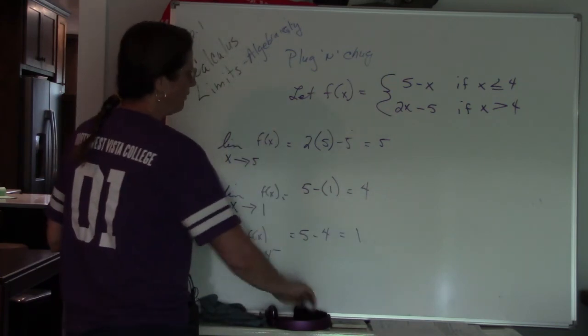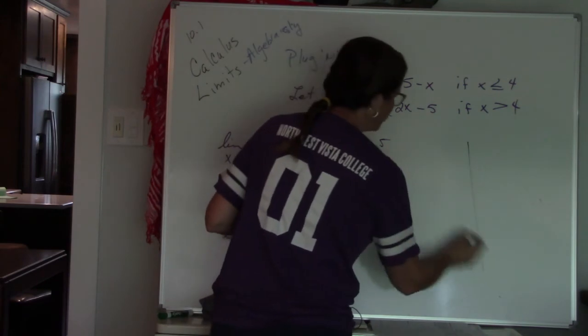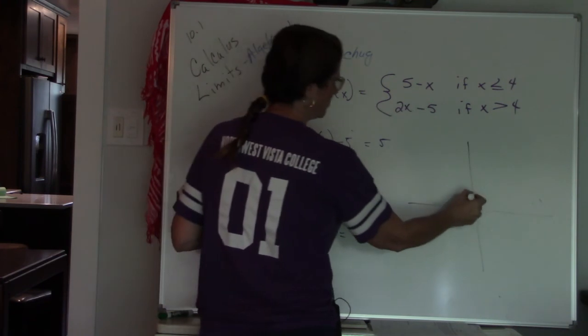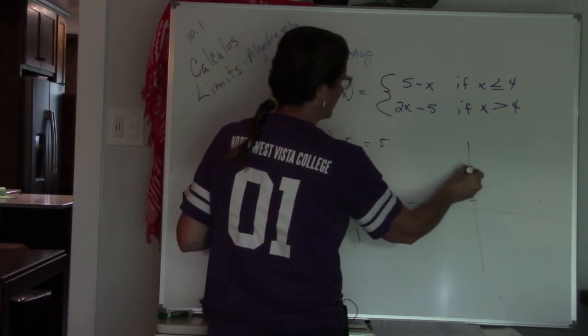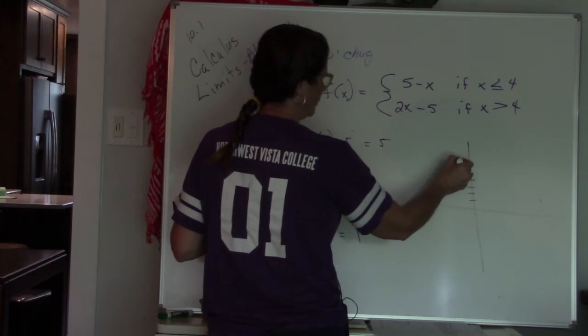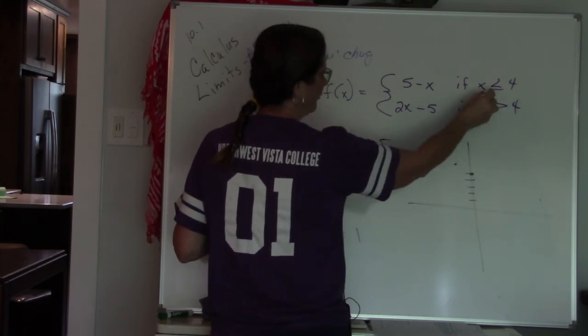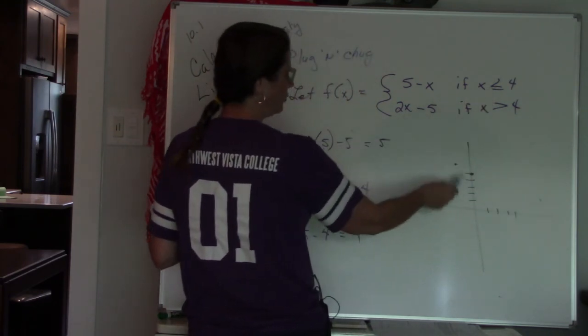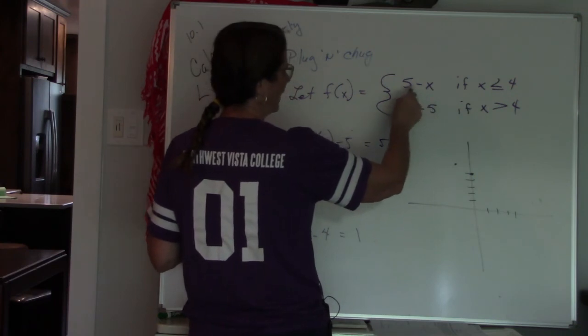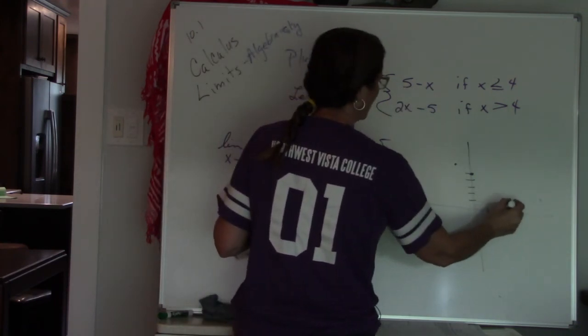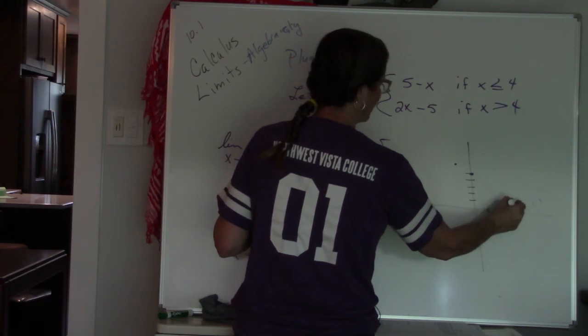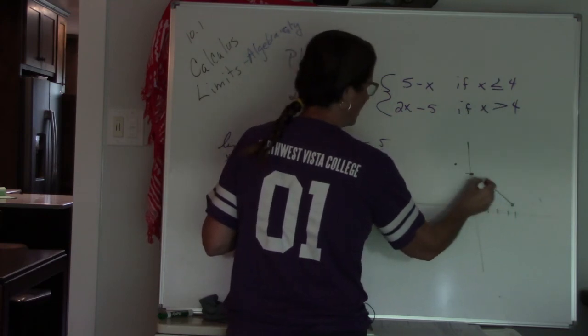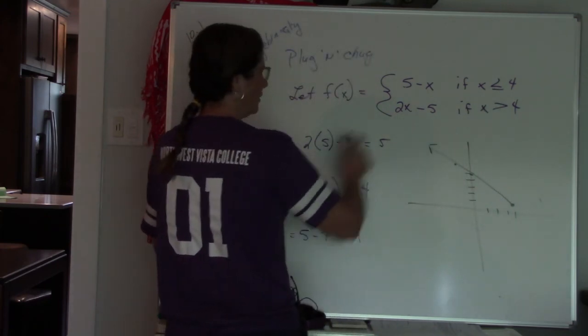Now, just to double check if you want to graph it and just see, make sure that your answers make sense. So I'm going to graph the first one, 5 minus x, which means it crosses at 5. I have a negative slope, so it goes up 1 and over 1. And it's all values less than 4. So 1, 2, 3, 4. So another way that you can do this is I can plug my 4 in, and I get 5 minus 4 is 1. So when x is 4, y is 1. And it's a solid because I have x is less than or equal to. So there's that value.